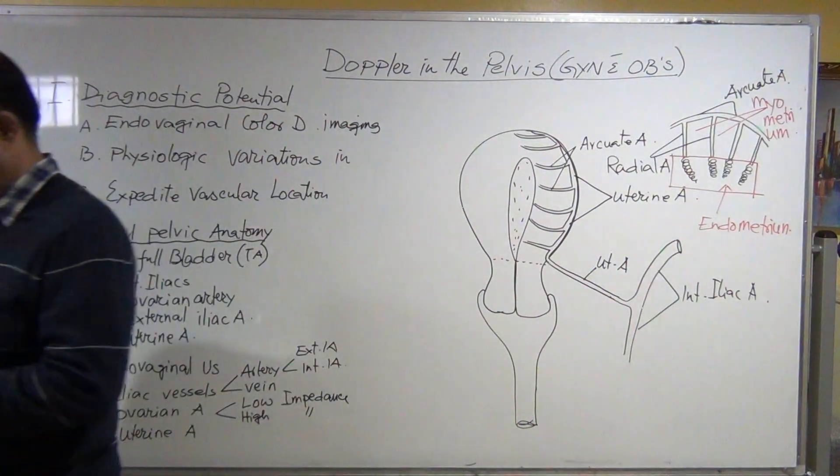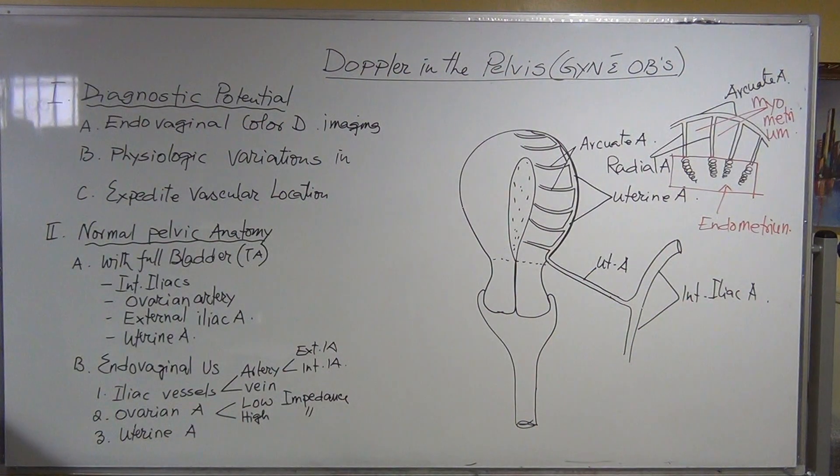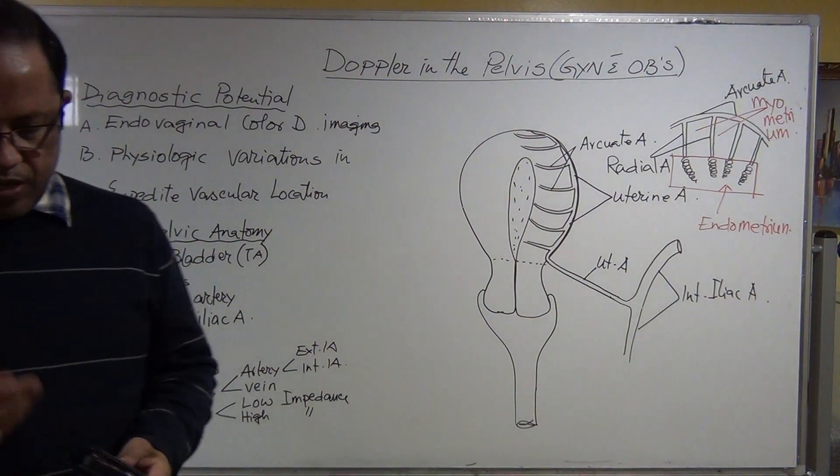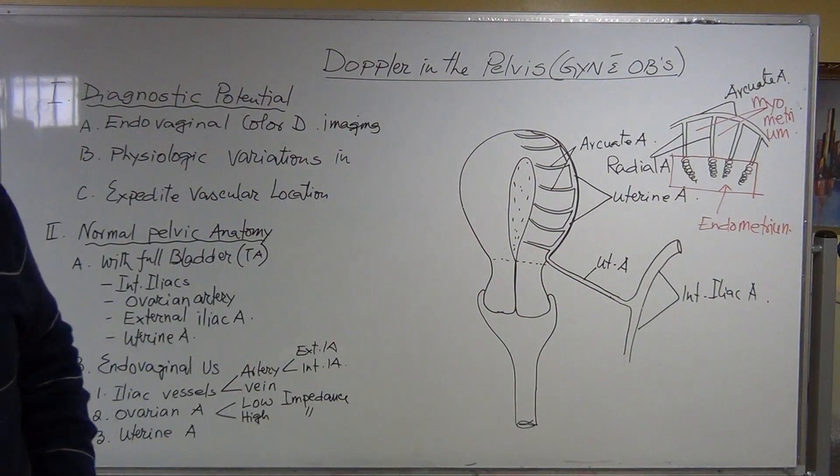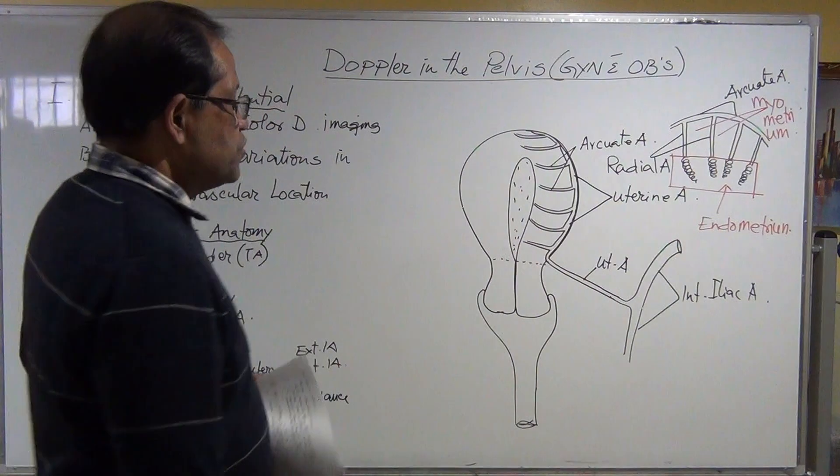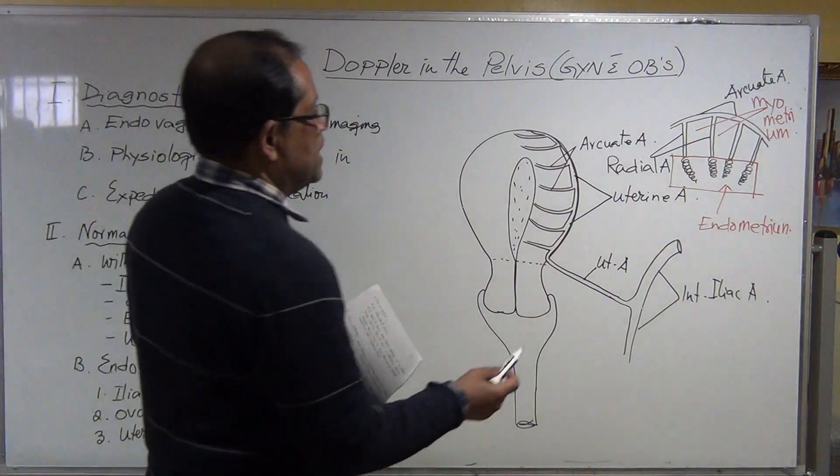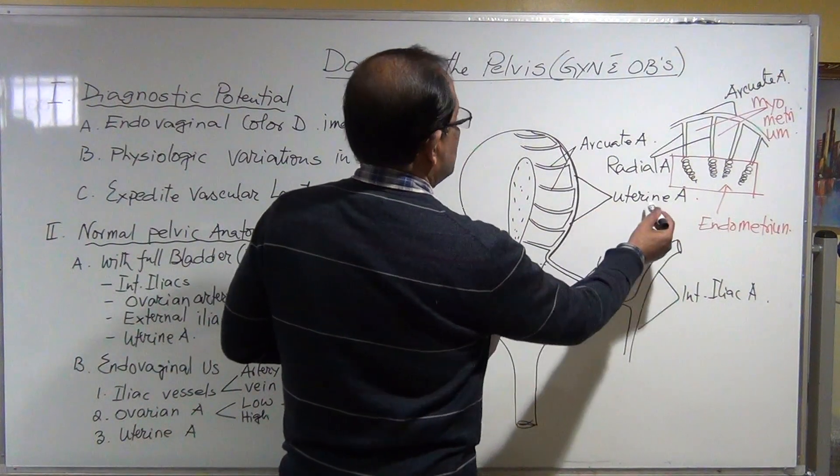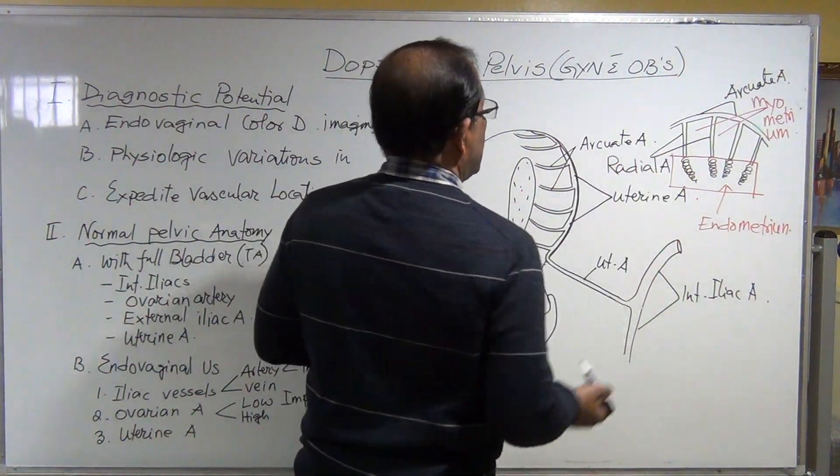Now this is the arrangement of the uterine artery. We need to evaluate this part of the uterine artery, this part of the uterine artery, and we can evaluate the arcuate artery.